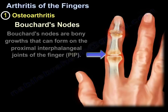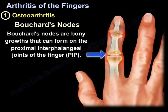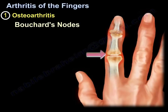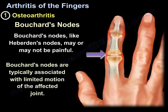Bouchard's nodes are bony growths that can form on the proximal interphalangeal joints of the fingers, which is the PIP. Bouchard's nodes, like Heberden's nodes, may or may not be painful. Bouchard's nodes are typically associated with limited motion of the affected joint.